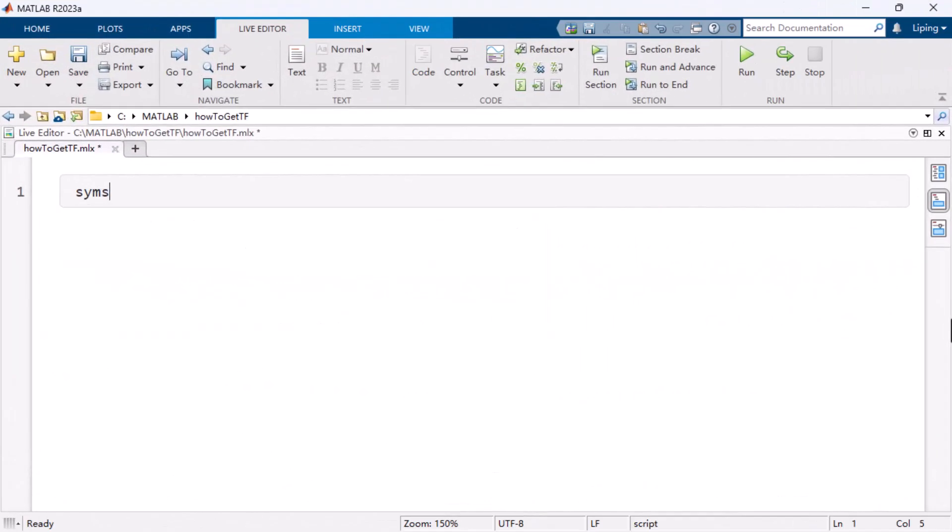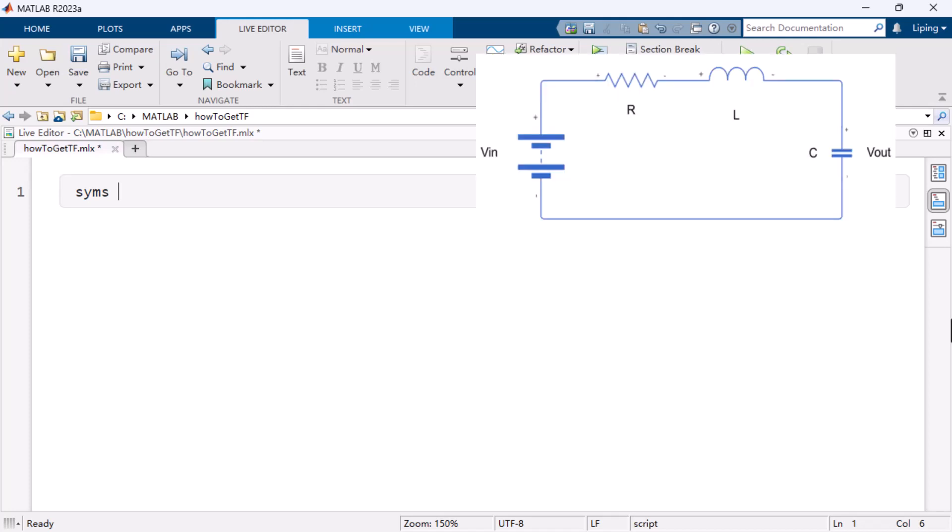As the first step, you need to define the components and signals of a circuit with symbolic variables. For example, considering an RLC circuit, let us define the values of the resistor, the inductor, and the capacitor as R, L, and C respectively. Also, some intermediate variables including the Laplace transforms of the input voltage, the output current, and the output voltage respectively as Vin, I, and Vout. Finally, the Laplace variable as s, and the transfer function as H.